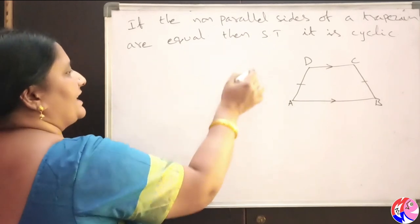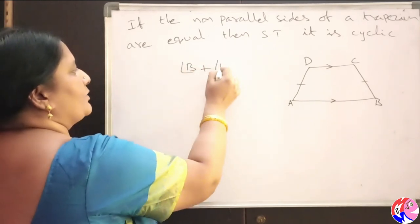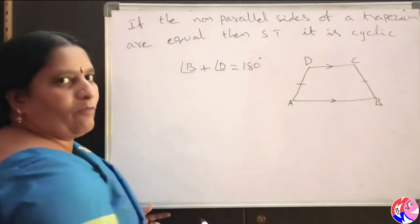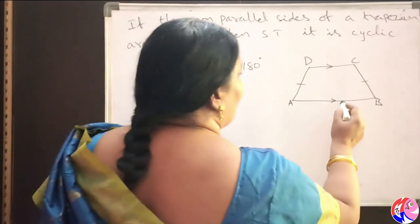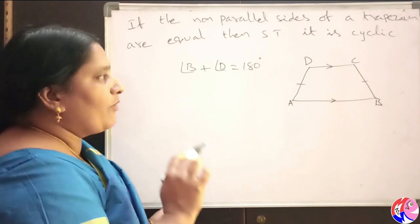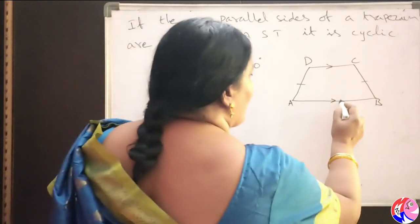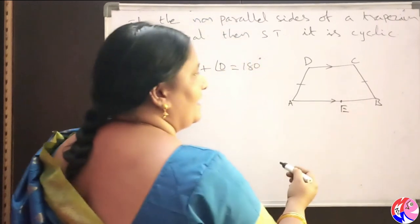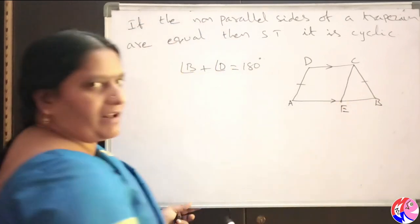For proving that ABCD is a cyclic quadrilateral, we are required to prove angle B plus angle D is equal to 180 degrees. We know that a trapezium is a combination of one parallelogram and one triangle. Consider a point E on AB such that AE and CD are equal.